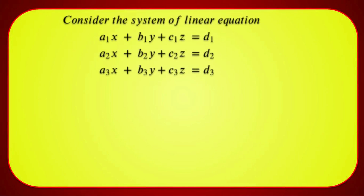Consider the system of linear equations: a1x + b1y + c1z = d1, a2x + b2y + c2z = d2, and a3x + b3y + c3z = d3. The coefficients form matrix A with entries a1, b1, c1, a2, b2, c2, a3, b3, c3. The variables x, y, z form column matrix X, and the constants d1, d2, d3 form column matrix B.